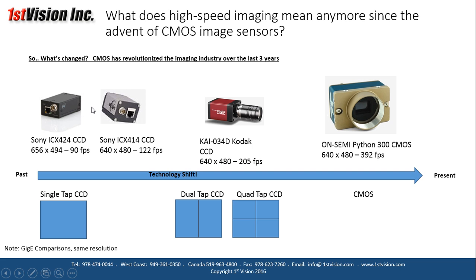So what's changed? About five years ago we were looking at cameras that were too slow — CCD technology. This has all progressed now into CMOS technology that provides the speeds we're getting today.